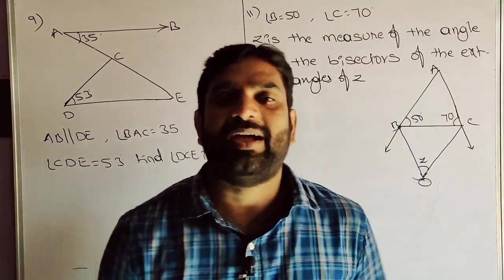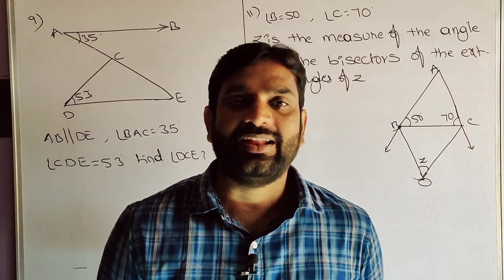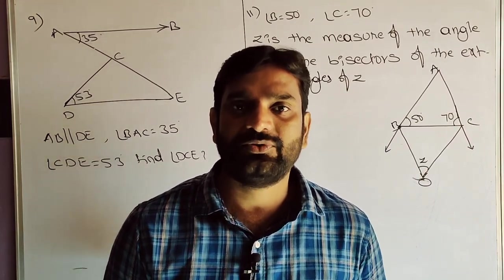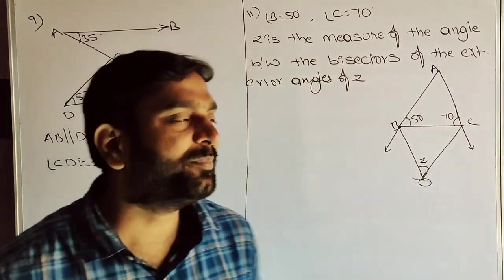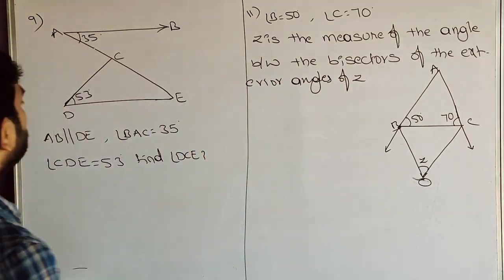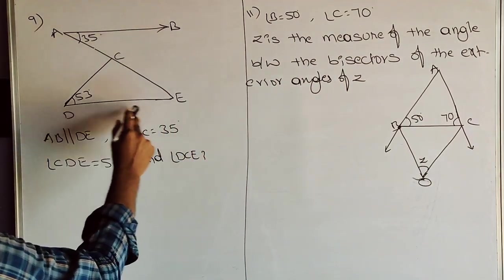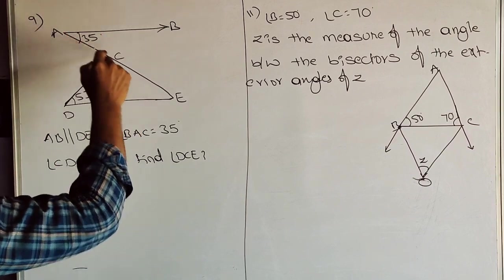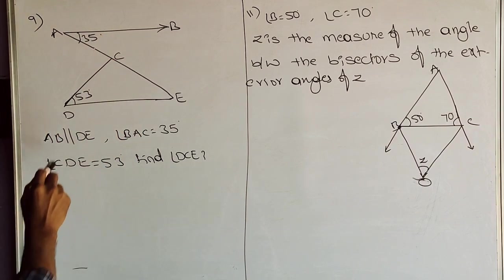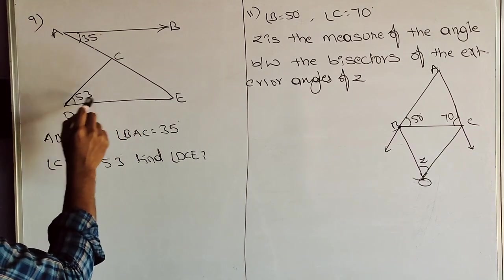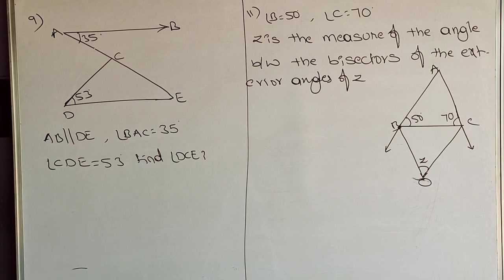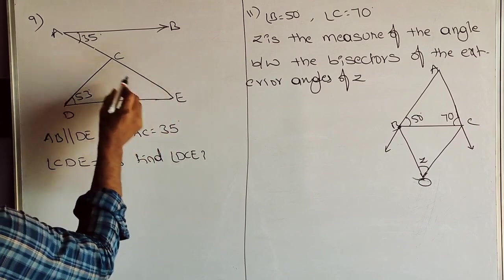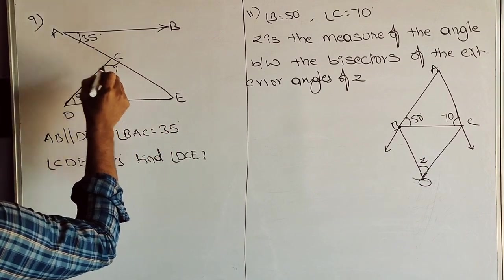Hello students, welcome back. Ninth class, fourth chapter: Lines and Angles, Exercise 4.4, ninth problem. The problem is: given AB parallel to DE, angle BAC = 35 degrees, angle CDE = 53 degrees. Find angle DCE.